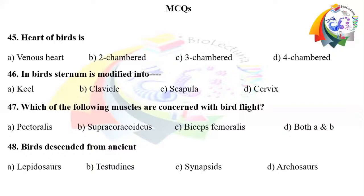Question number 48: Birds descended from ancient. Option A: Lepidosauria. Option B: Testudines. Option C: Synapsida. Option D: Archosauria.